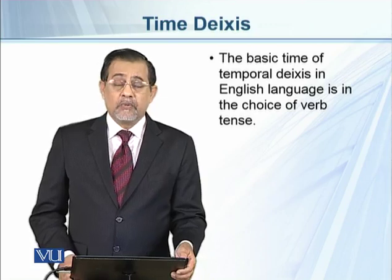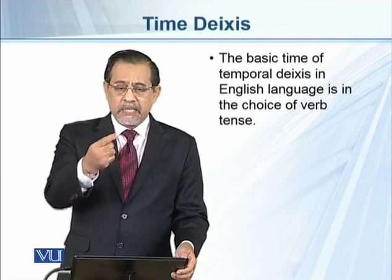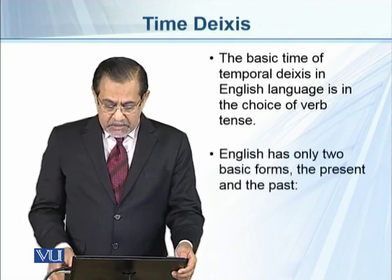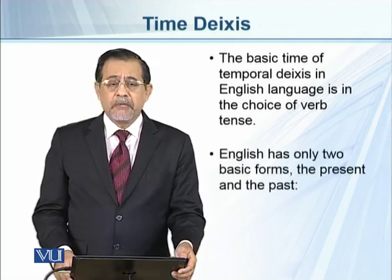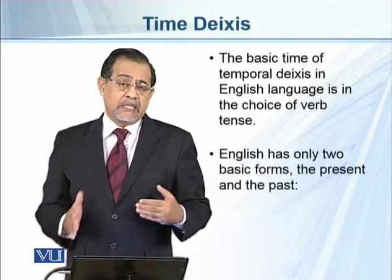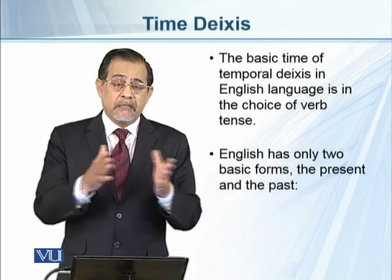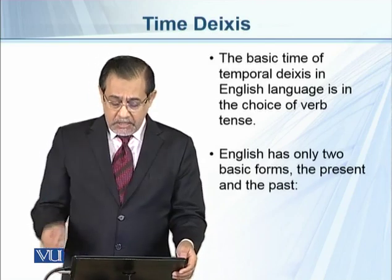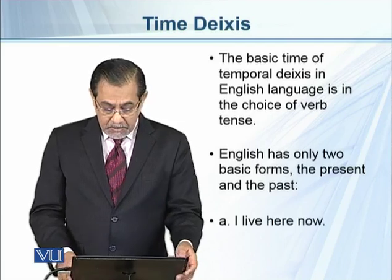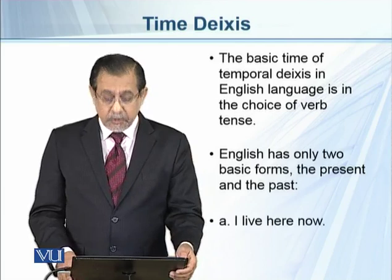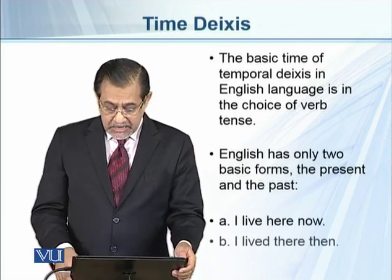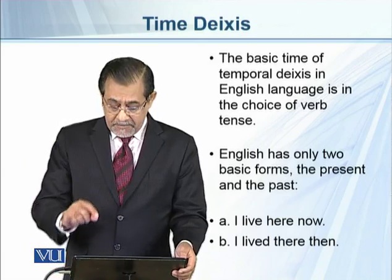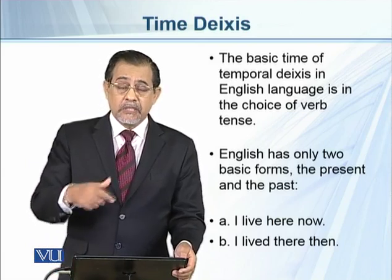Tenses give both these senses. The basic time of the temporal axis in English is in the choice of verb tense — it tells whether the action is taking place in the present or took place in the past. English has only two basic forms: the present and the past. For example, 'I read a book' (simple present) and 'I read a book' (simple past). 'I live here now' refers to my present state, and 'I lived there then' refers to my past state.